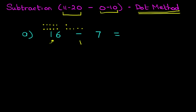Now have a look at the sign. It is minus, so we're going to cross out some of the dots. How many dots are we going to cross out? Well, it tells us in the question. We're going to cross out 7 dots.